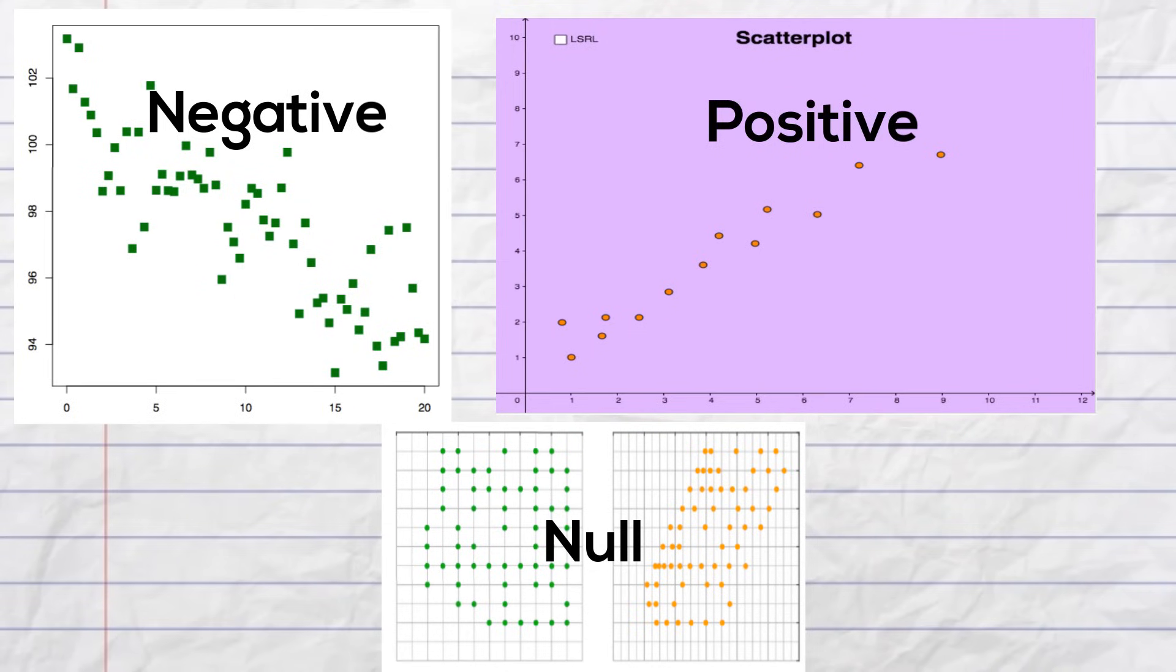After you have created the scatter plot, you next can determine if it has a negative correlation, a positive correlation, or null or no correlation.